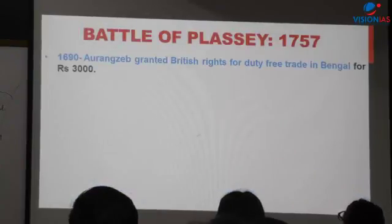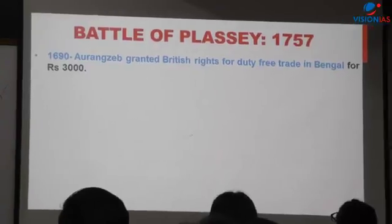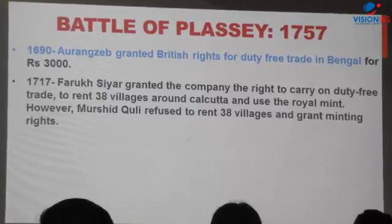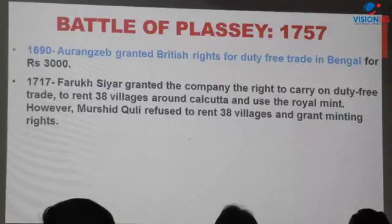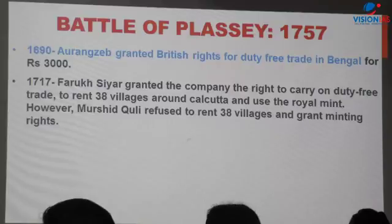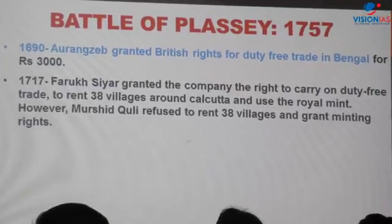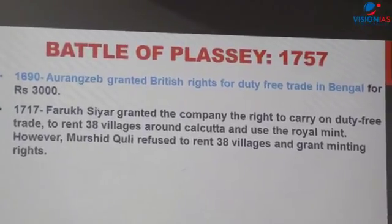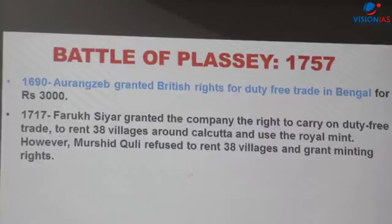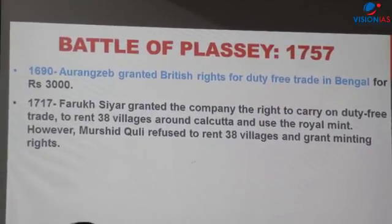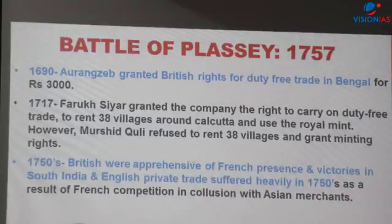Aurangzeb had initially granted the British duty-free trade rights for a sum of 3,000 rupees. Later, Farrukhsiyar extended these trading privileges further, even giving the right to collect rent from 38 villages around Calcutta and use the royal mint. Notably, Mursheed Kuli refused to obey Farrukhsiyar's orders to grant these revenue-collecting or mint rights — demonstrating the extent of Mursheed Kuli's autonomous authority. In the 1750s, the British were apprehensive of French presence and victories in South India, and English private trade suffered heavily.